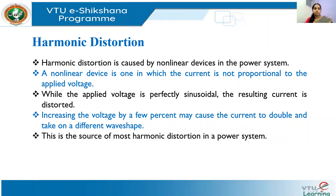Let us start with harmonic distortion. We know that a harmonic is the distortion of any sinusoidal electrical quantity. Harmonic distortion is caused by non-linear devices in the power system — those where the current is not proportional to the applied voltage.